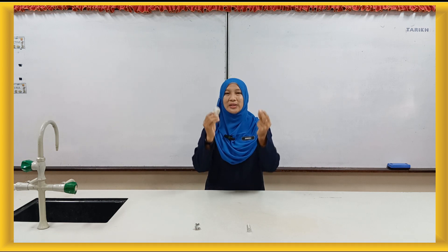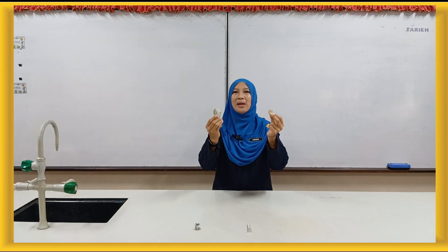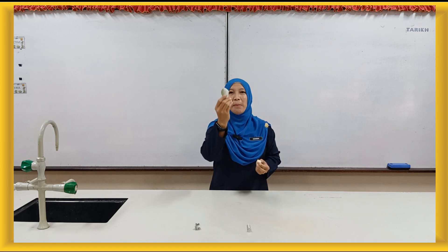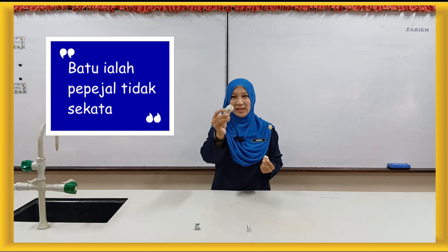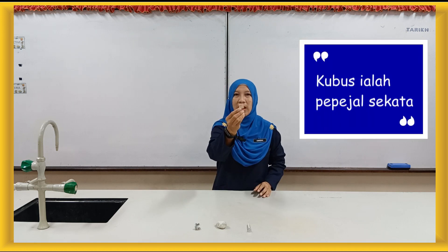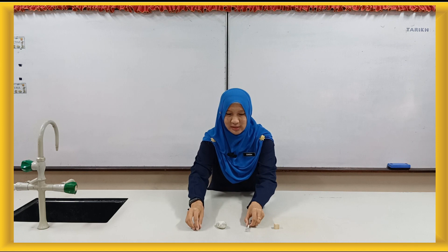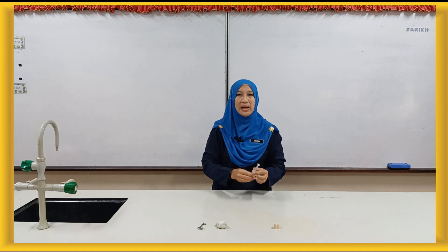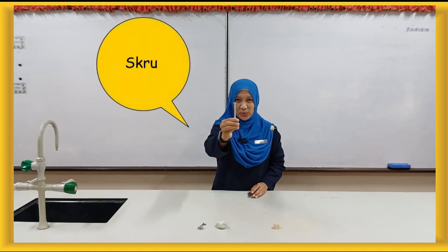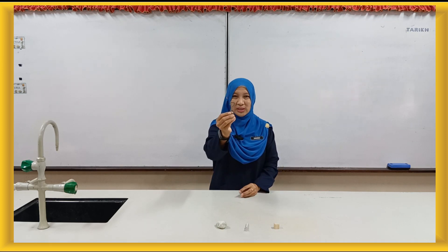Di tangan cikgu ada dua objek. Di tangan kanan ada batu dan di sebelah kiri ada kubus. Yang mana satukah merupakan pepejal tidak sekata? Ya, batu ialah pepejal tidak sekata. Kubus pula merupakan objek pepejal sekata. Terdapat beberapa contoh objek pepejal tidak sekata, iaitu skru, guli, dan juga kunci.